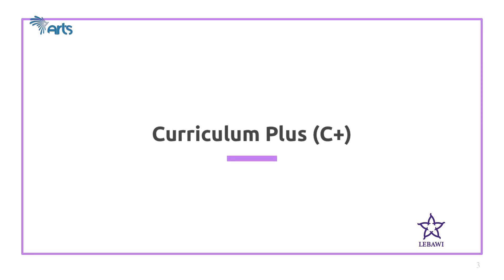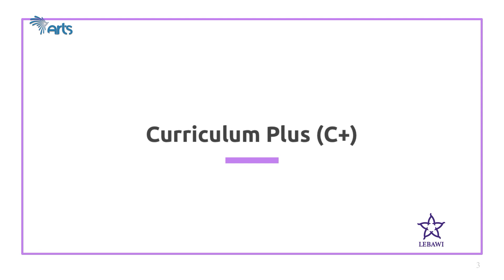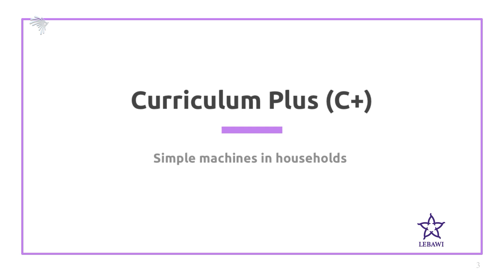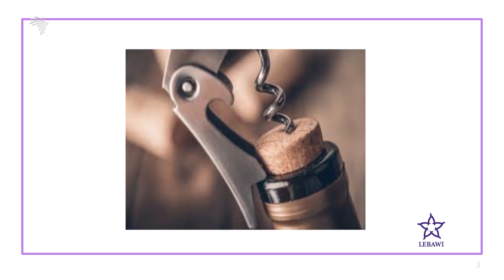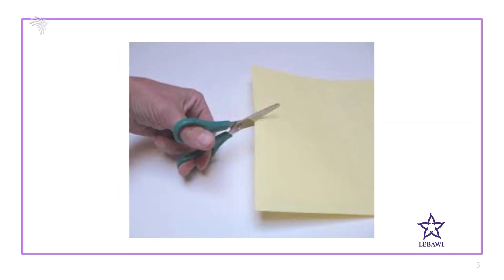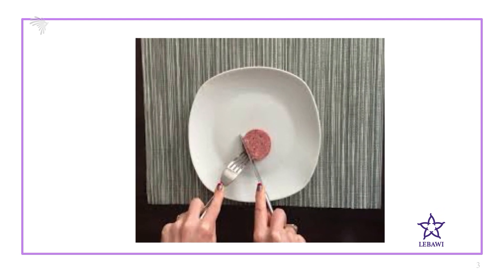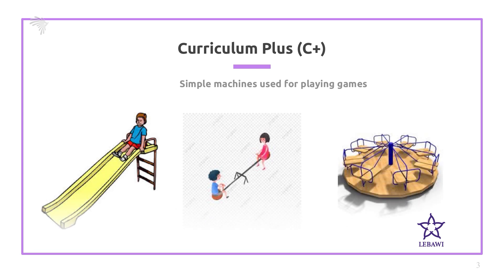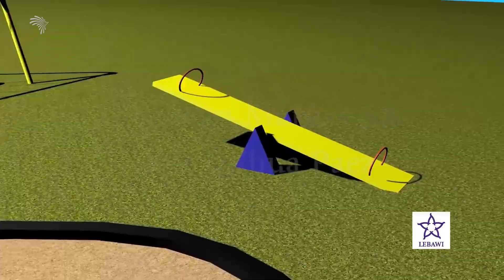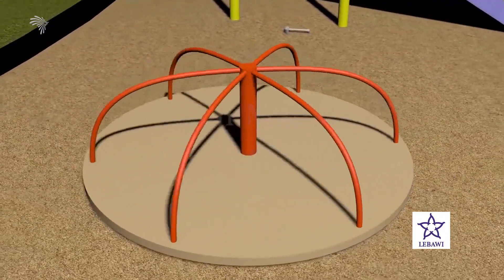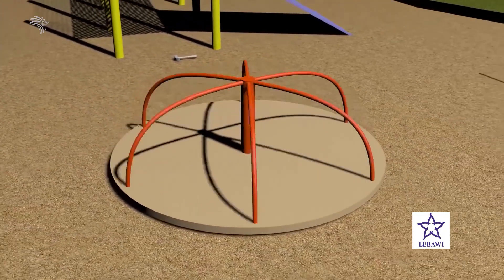As curriculum plus, other applications of simple machines include household items such as bottle openers, scissors, knife, and forks. There are also simple machines used for playing games, like inclined planes, seesaws, and merry-go-rounds. For instance, a merry-go-round is an example of wheel and axle.